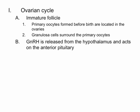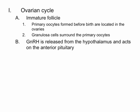A hormone called GnRH, or gonadotropin-releasing hormone, is released from the hypothalamus and acts on the anterior pituitary. The anterior pituitary then releases the gonadotropins FSH and LH. FSH is going to stimulate the follicle to grow and start secreting estrogen.